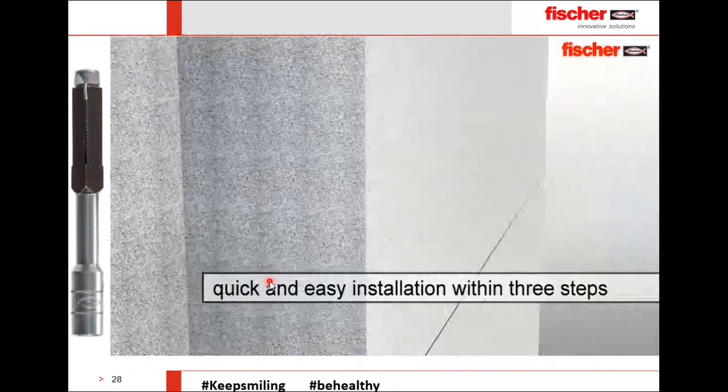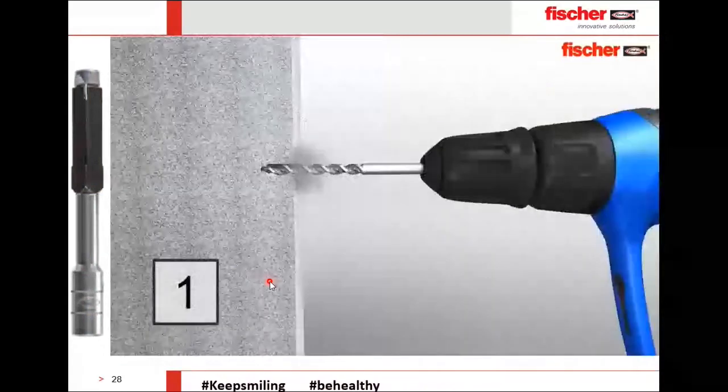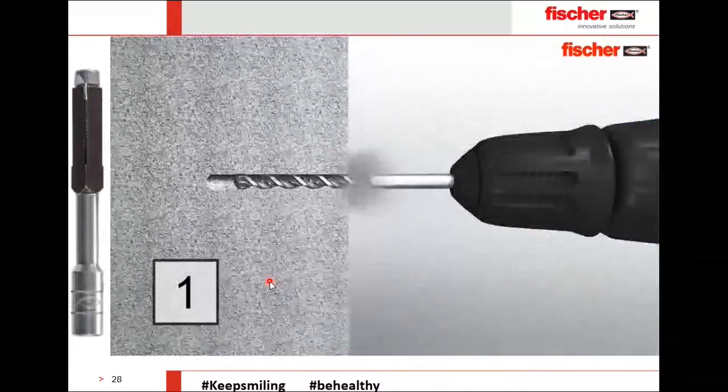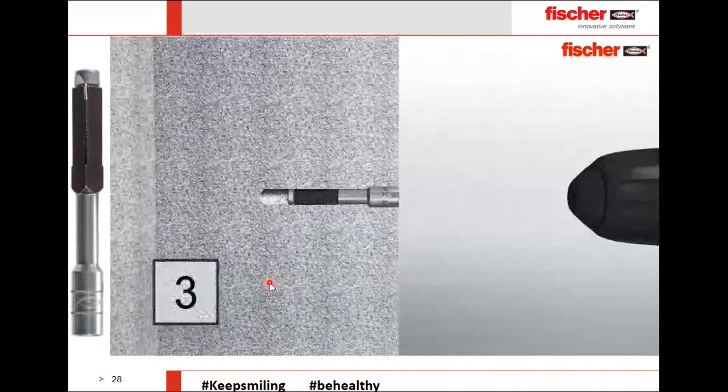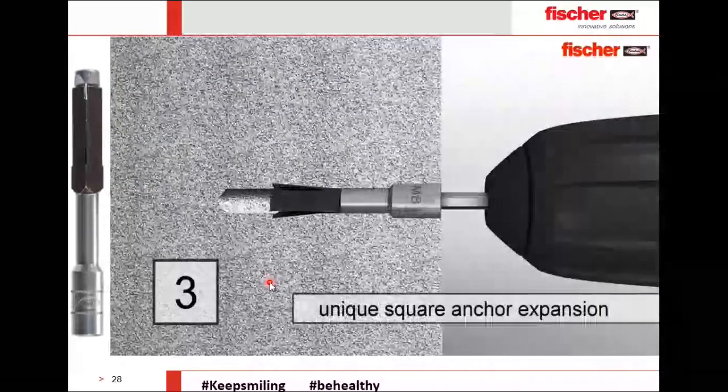Now let's look at the FPX-I steel anchor installation video. There are three steps: make a hole with a drill machine, insert the anchor and use a hammer to punch it in, and then use the provided setting tool. The setting tool creates a unique square expansion — it expands like a butterfly inside the block with automatic setting control for perfect expansion.